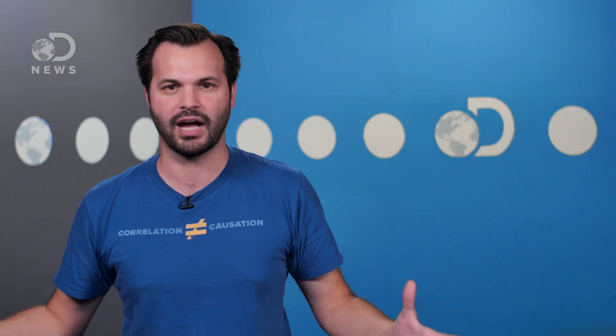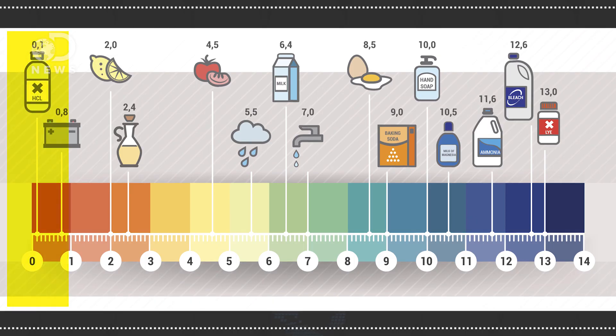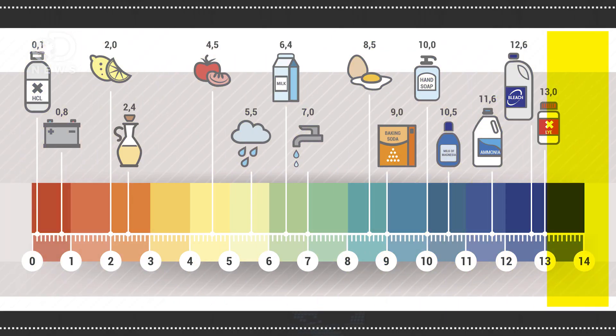To understand acid rain, you have to understand pH levels. pH means 'power of hydrogen' — essentially it measures the kind of hydrogen in a solution. It ranges from 0 to 14, with 0 (battery acid) being the most acidic, and 14 (lye) being super alkaline or basic. 7 is neutral.